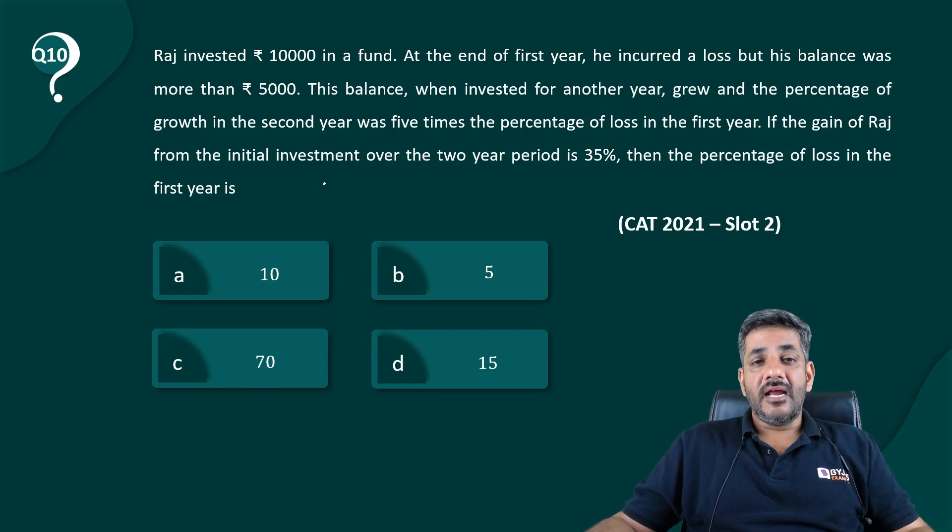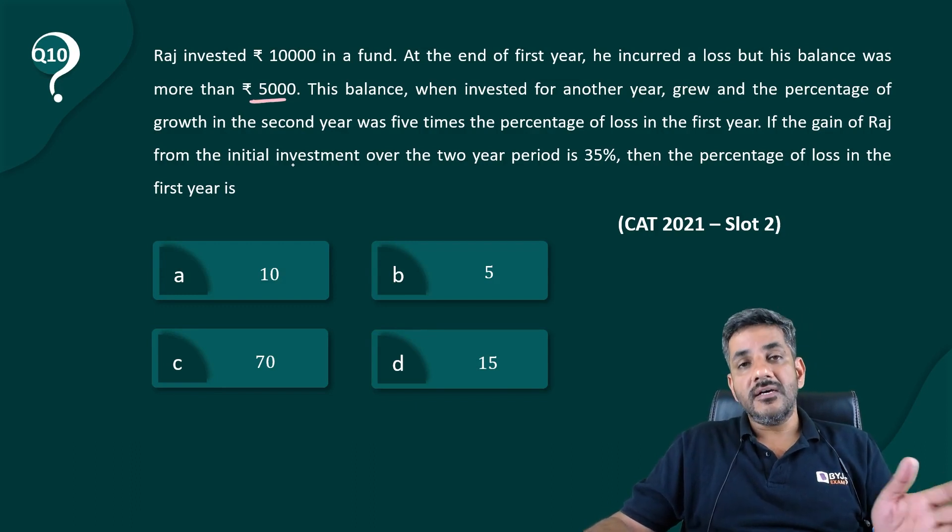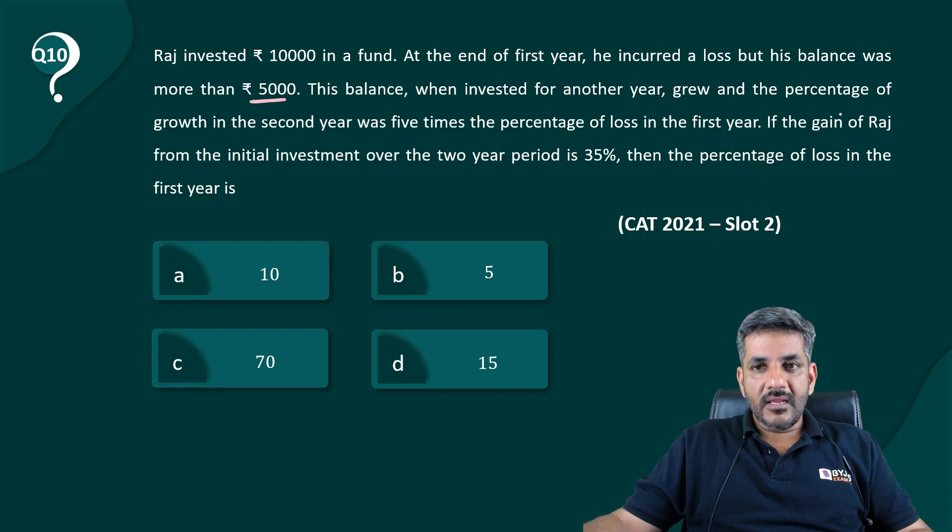Raj invested 10,000 rupees in a fund. At the end of the first year, he incurred a loss but his balance was more than 5000. This balance, when invested for another year, it grew and the percentage of growth in the second year was five times the percentage of loss in the first year.